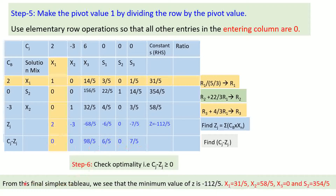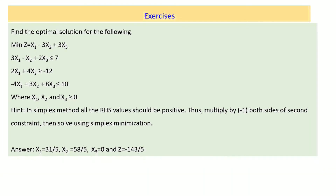Step 7: from the final Simplex Tableau, the minimum value of Z is minus 112 over 5. This is achieved when x1 equals 31 over 5, x2 equals 58 over 5, and x3 equals 0. This concludes today's discussion. An exercise with solutions has been provided; follow the steps strictly and verify your answers.